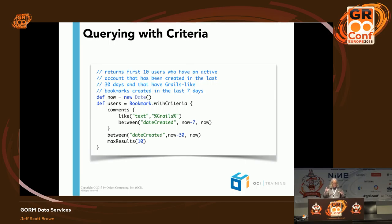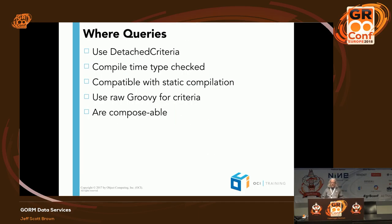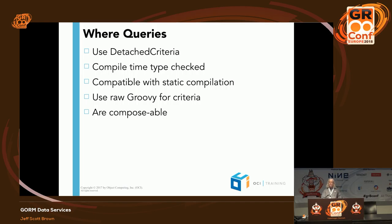Dynamic finders are great for simple queries; the criteria API is better for more robust ones. Where queries were introduced in Grails 2 and are how I express almost all queries with GORM now. They use the detached criteria API, are compile-time type-checked, use raw Groovy for criteria, and they're composable.